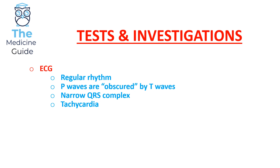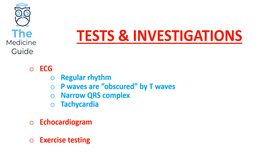Other possible investigations include an echocardiogram, which in adults with SVT is usually normal. The echocardiogram tends to be abnormal in paediatric patients who also have other congenital heart diseases. Exercise testing can also be performed, as in some patients exercise can elicit an SVT episode — though not in all. Exercise testing is therefore an investigation that can be considered but is not mandatory.